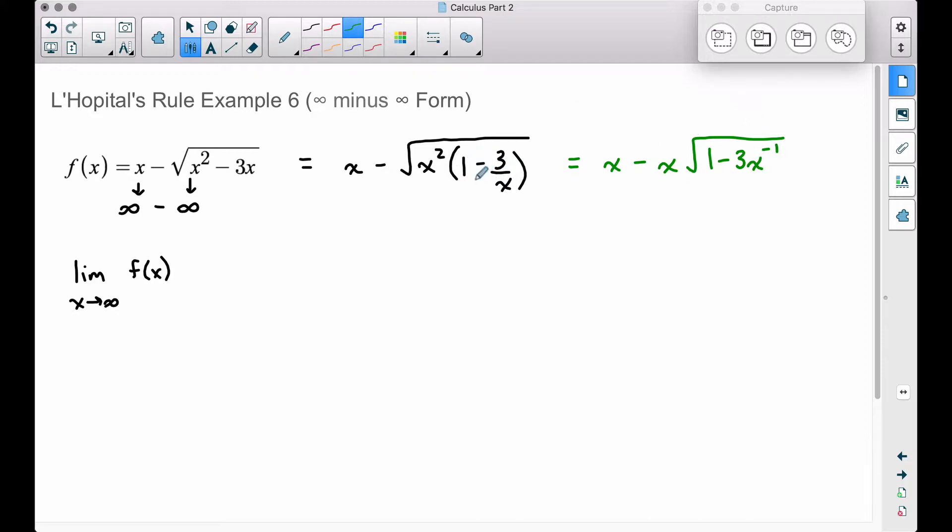So hopefully that doesn't confuse you too much. 1 minus 3 over x is 1 minus 3 times x to the negative 1. And then when we took the square root of x squared, we get x. Now, let's factor that x out of this term and this term here. Factoring that x out, we have 1 minus the square root of 1 minus 3 times x to the negative 1 power. All I did was pull these x's out. You can verify this by distributing. x times 1 is x, and x times this negative square root of stuff is just going to simply put that x back right there.